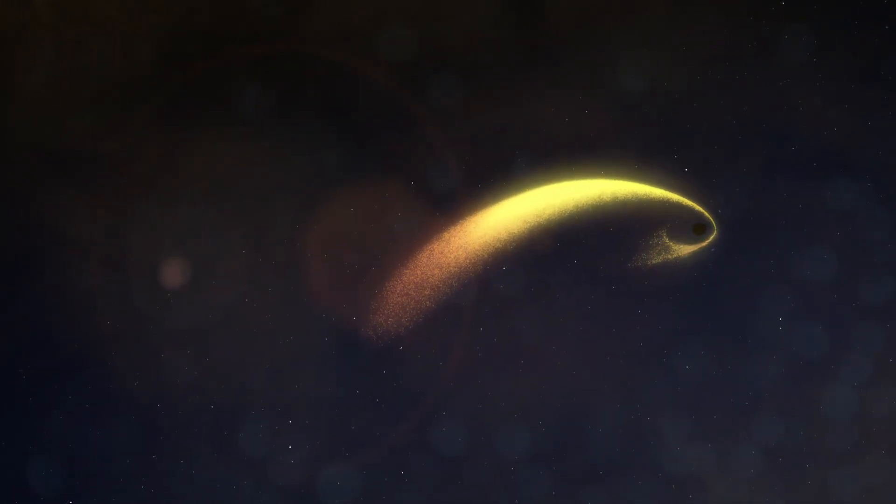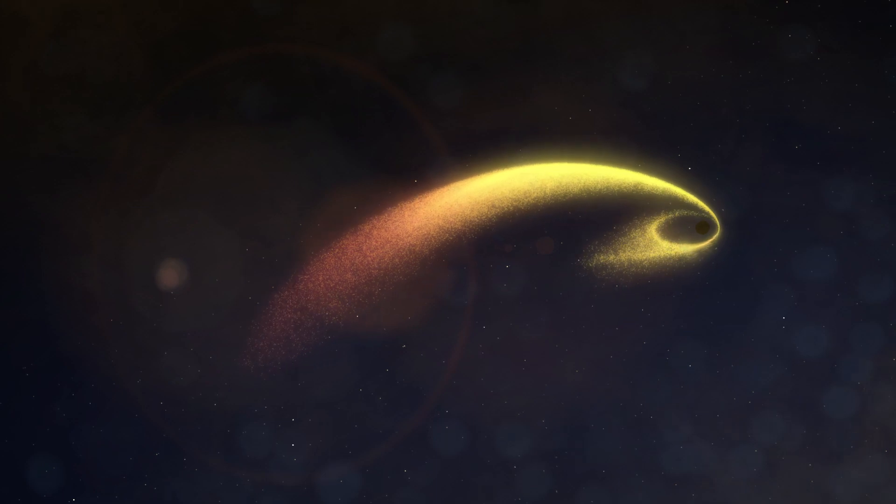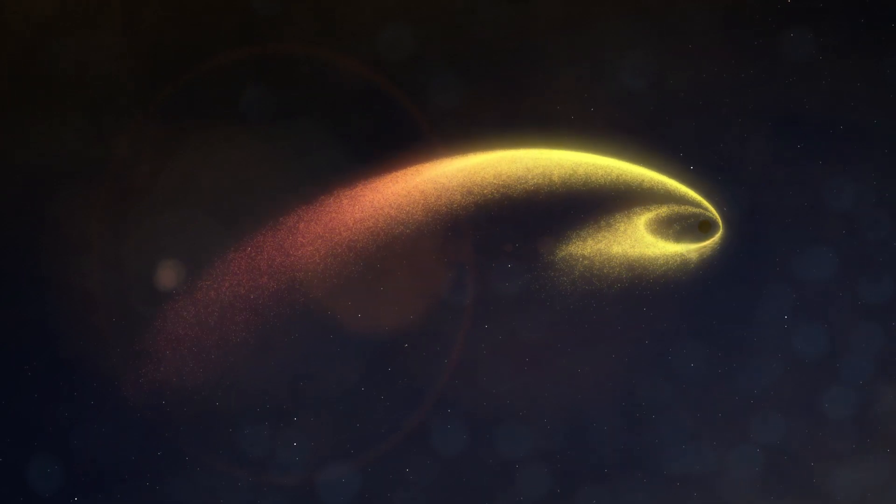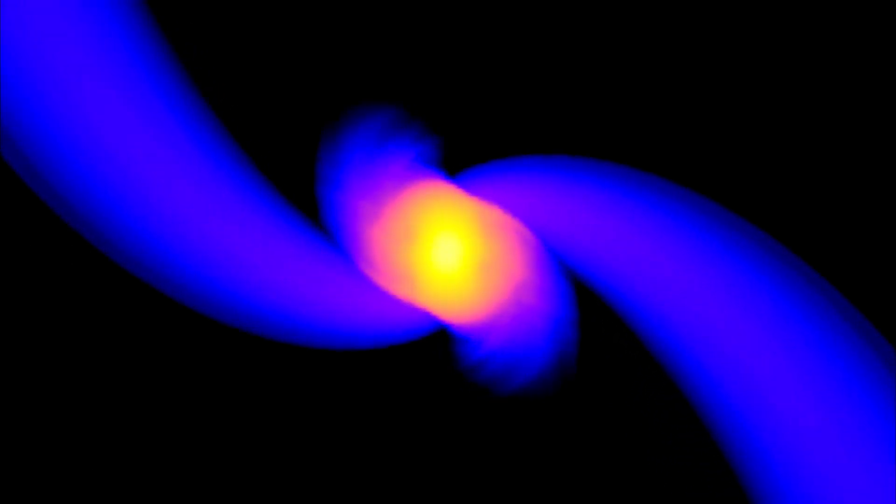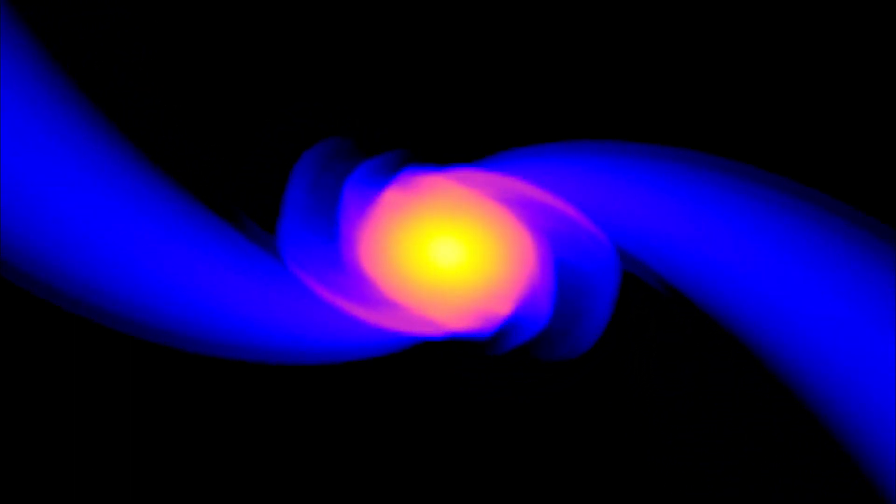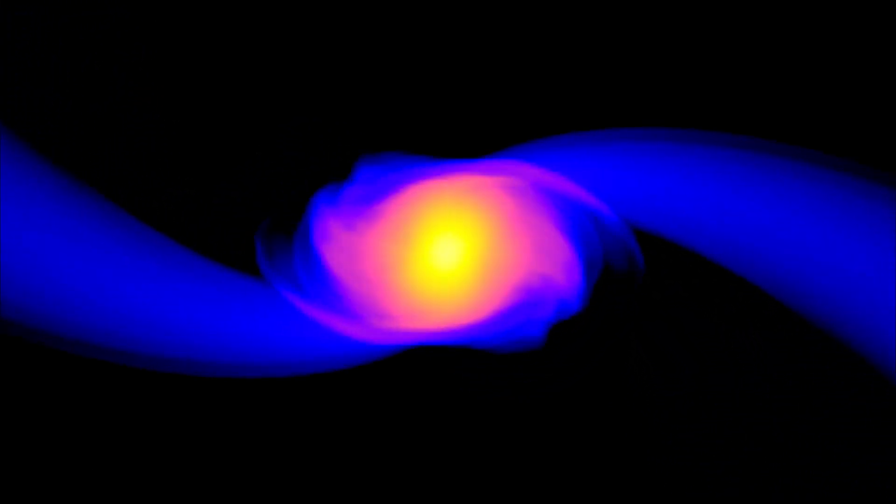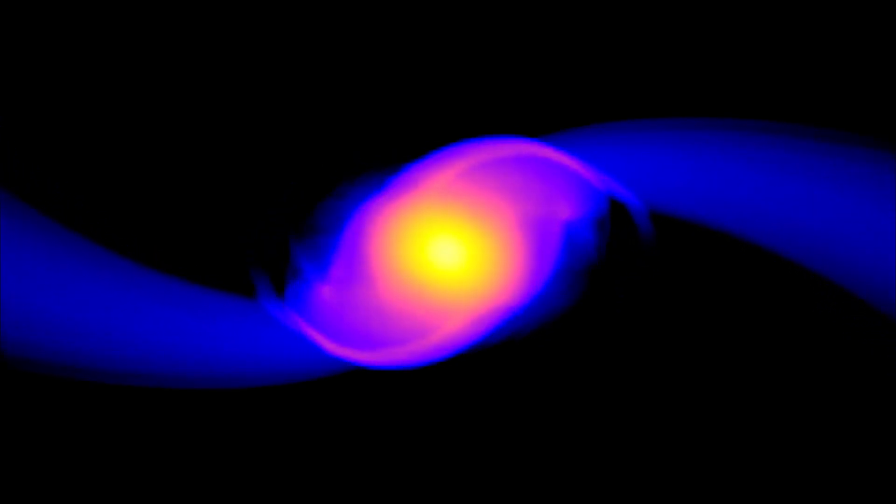Gravitational forces create intense tides that deform the stars and break them into streams of gas. These simulations are the first to combine the physical effects of Einstein's general theory of relativity and virtual stars with realistic internal structures.